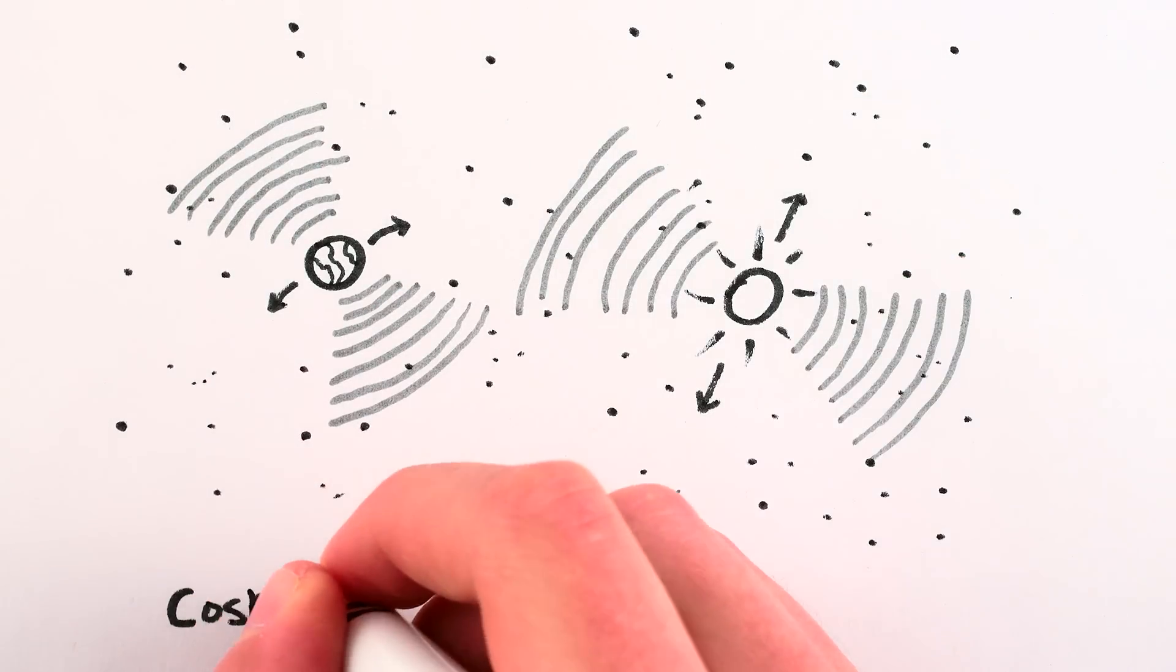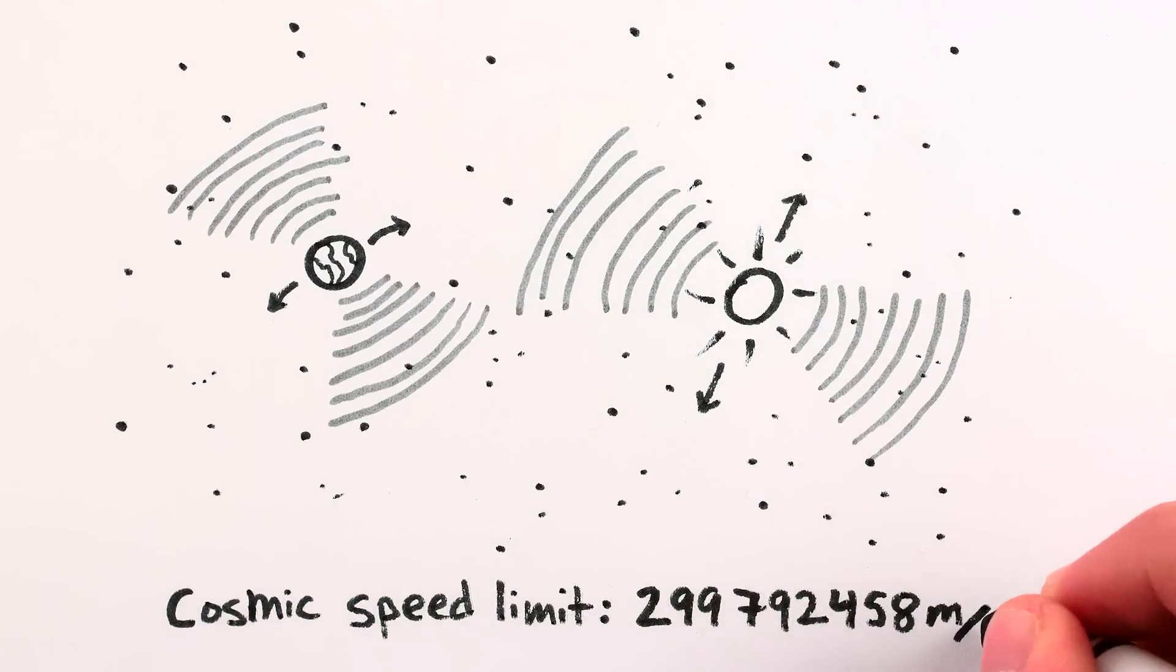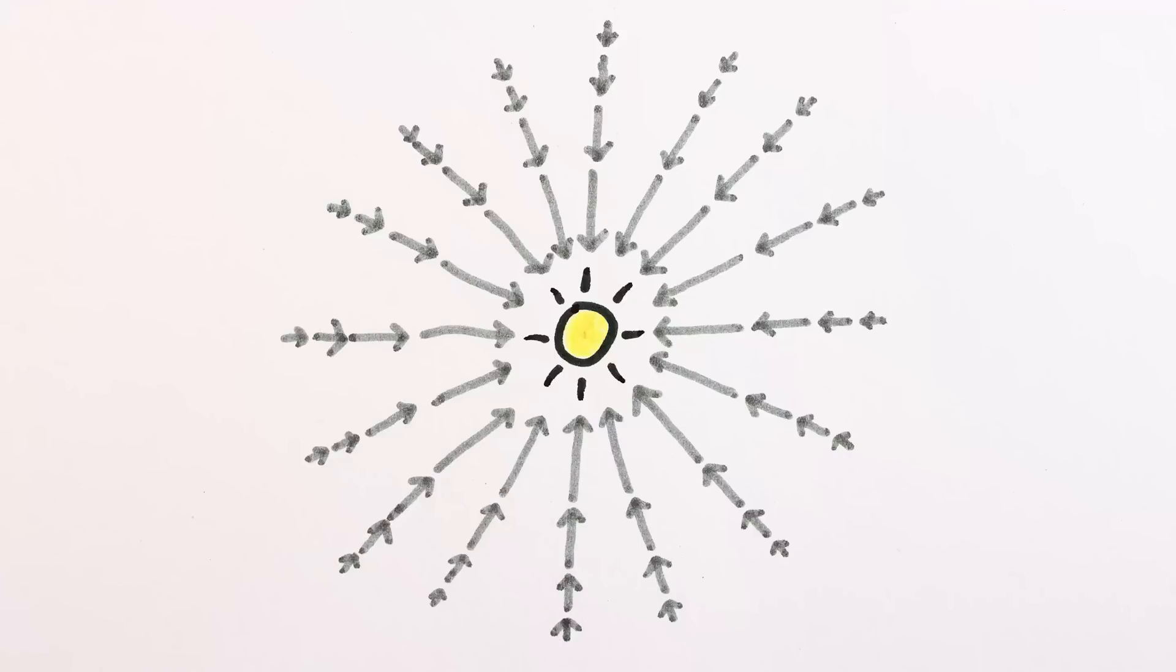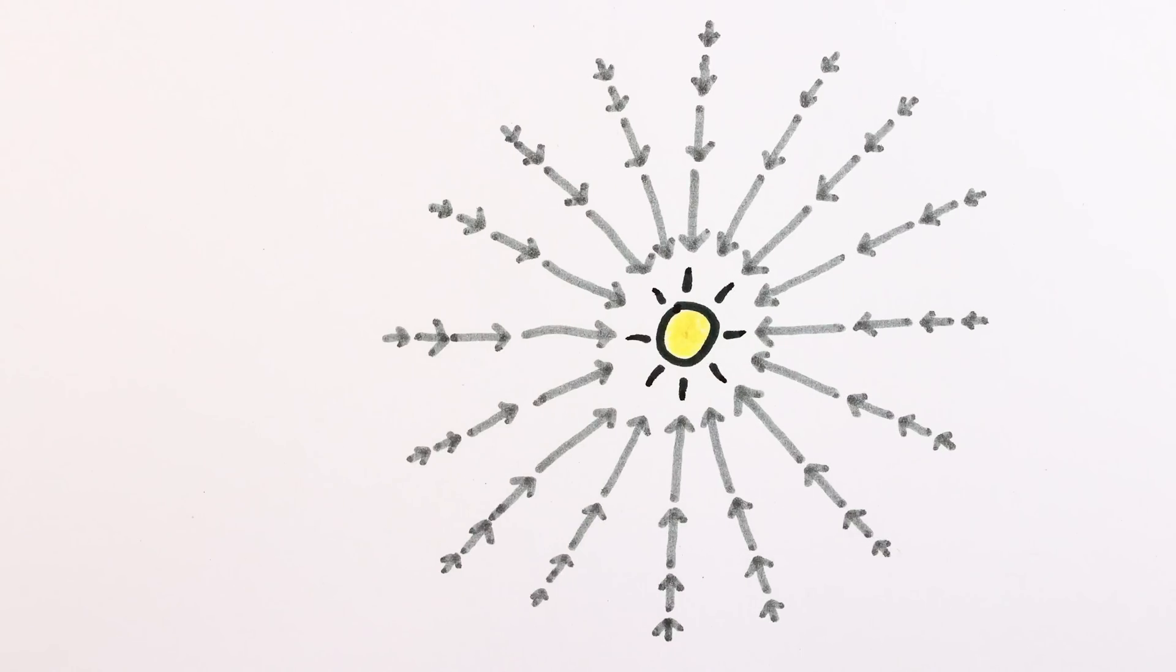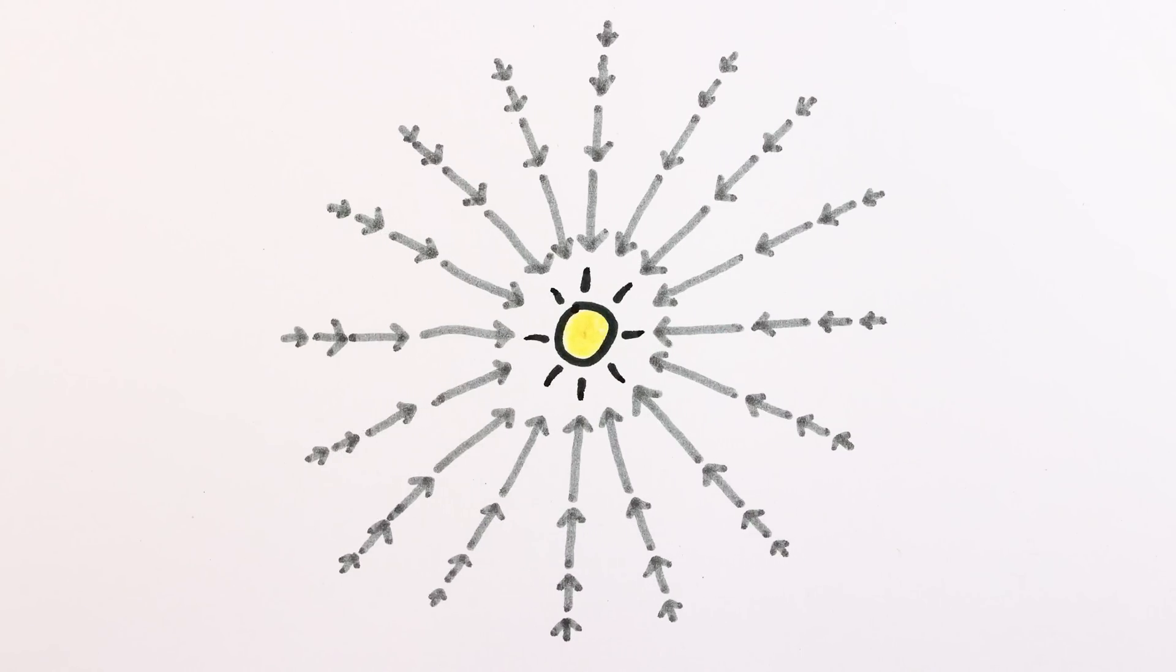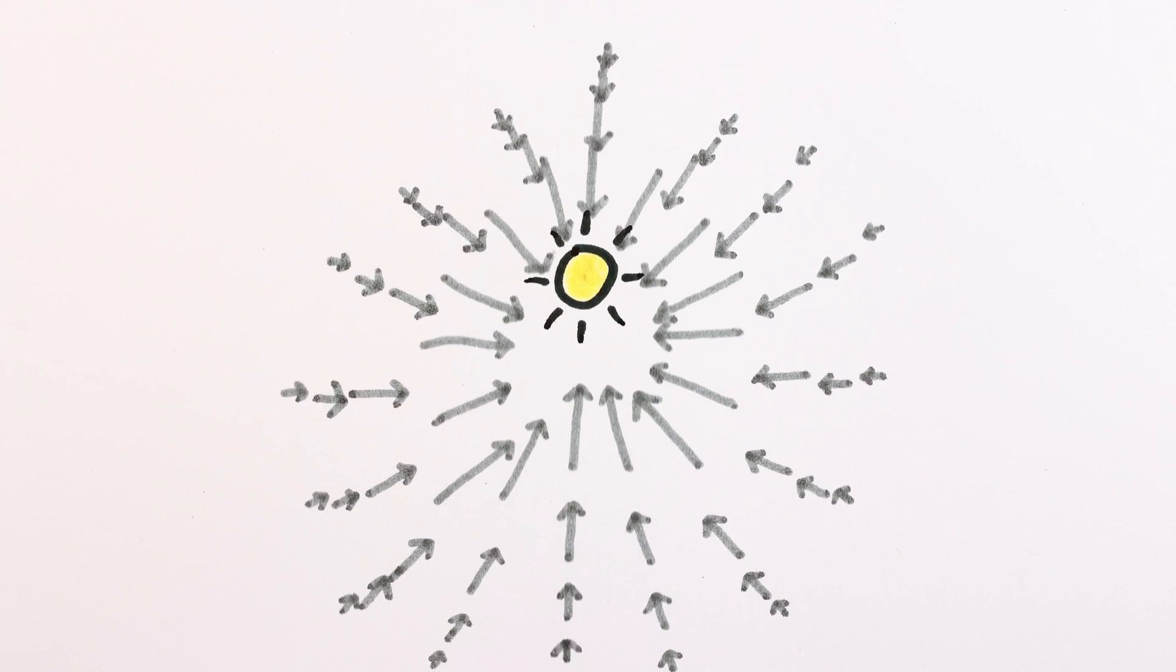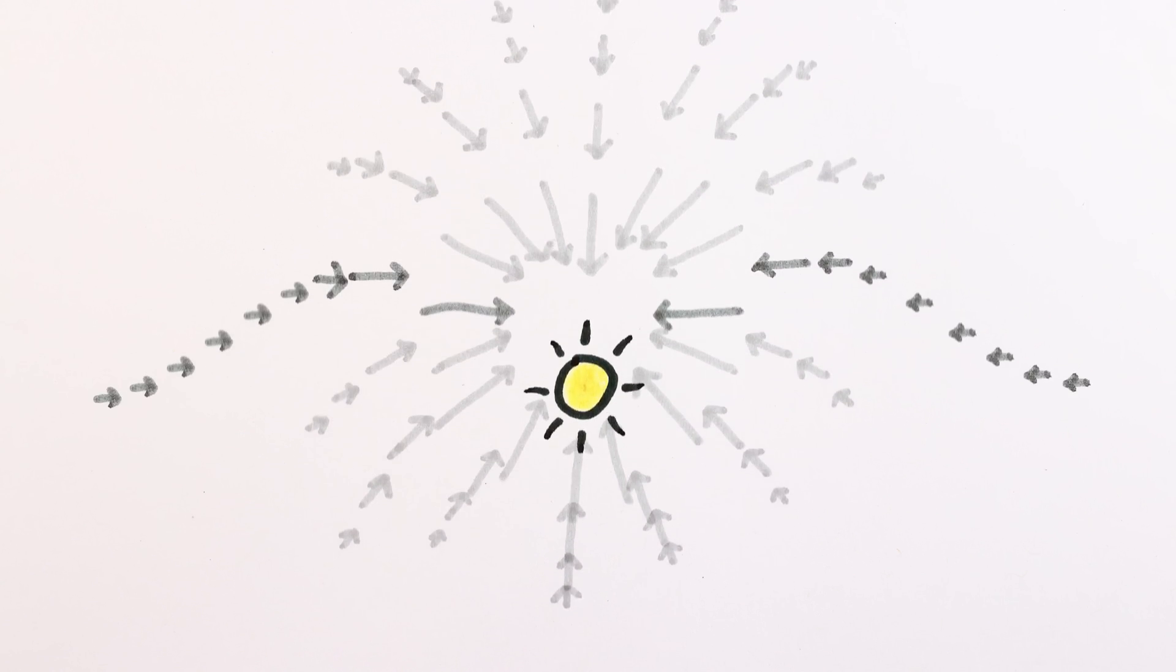Gravitational waves happen because the effects of gravity don't travel outwards at infinite speed. So if the sun were to suddenly jump a few hundred thousand kilometers to one side, the changed gravitational field would take time to pulse outwards. And if the sun shook back and forth and back and forth instead of a single pulse, you'd get continuous gravitational waves.